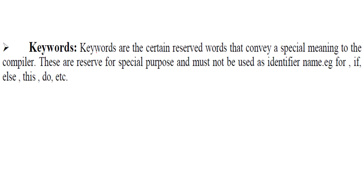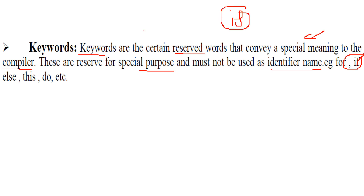Keywords. What are keywords? A programming language always has certain words which are known to the compiler — these are reserved for them. Keywords are nothing but the reserved words that have a special meaning conveyed to the compiler. These are reserved words for a special purpose and should not be used as an identifier name. For example, 'if' — since 'if' is a keyword, you cannot use it as an identifier.